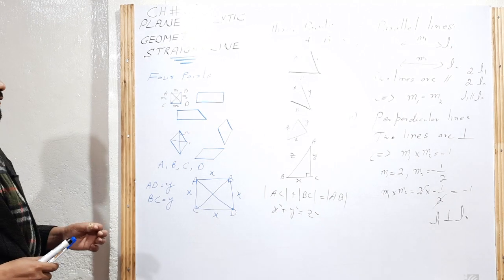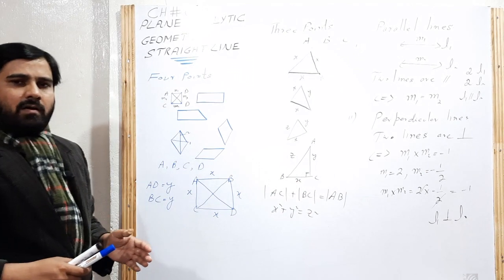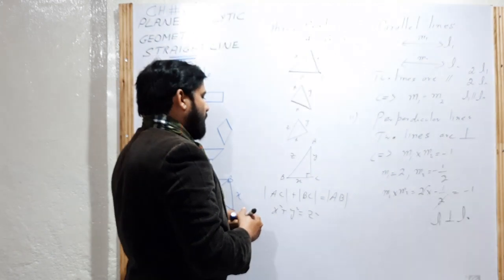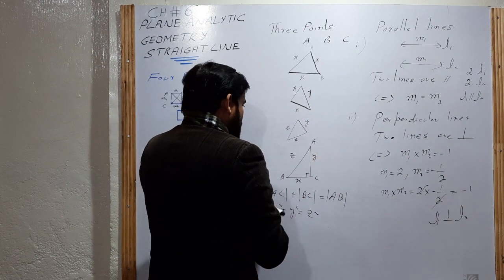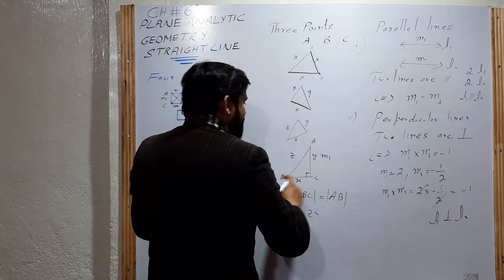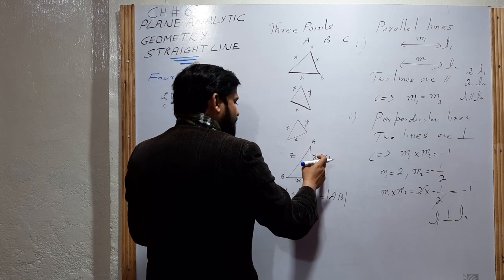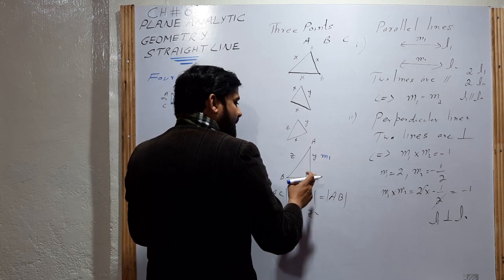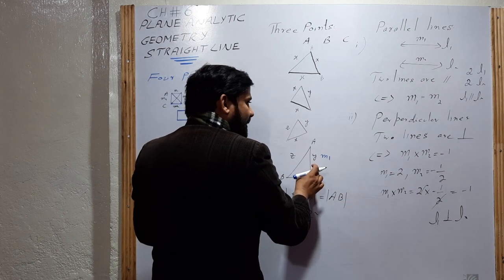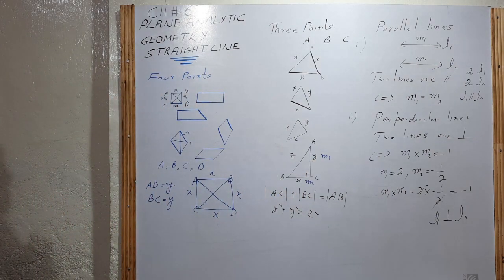To prove four points represent a right-angled triangle: find slope M1 of line AC and slope M2 of line BC. If M1 × M2 = −1, the lines are perpendicular — meaning there is a right angle, so A, B, C represent a right-angled triangle.